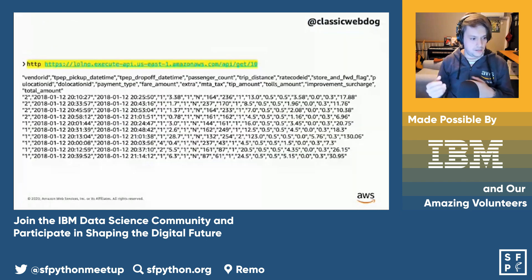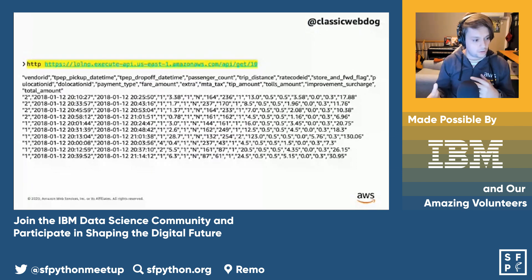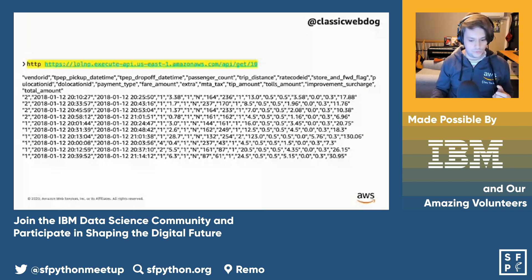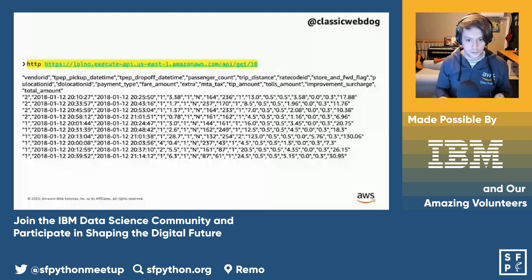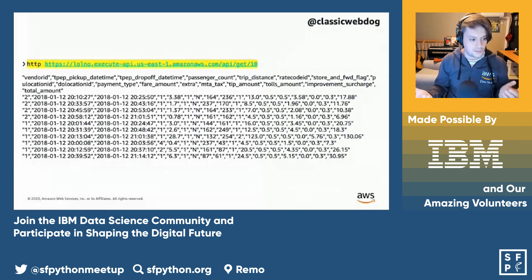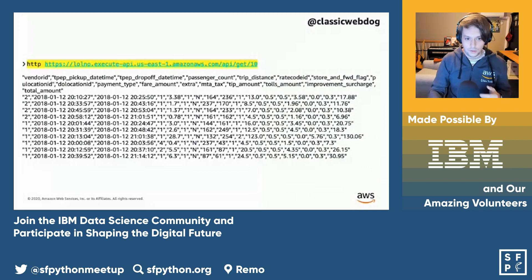In a real-world scenario, you might be part of a development group providing business logic, applications, and data to another team within your organization. Using something like AWS Chalice allows you to do this very rapidly and at minimal cost. I think it's one of the coolest things I've come across at AWS, and I really love talking about it.